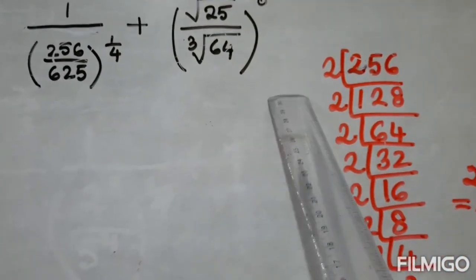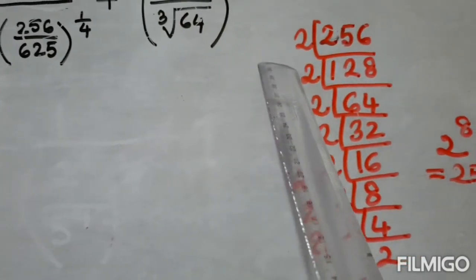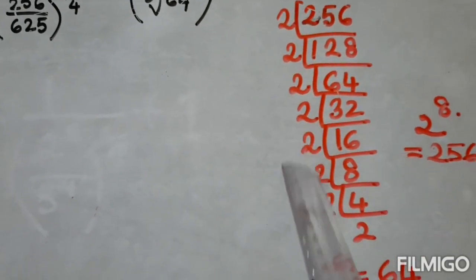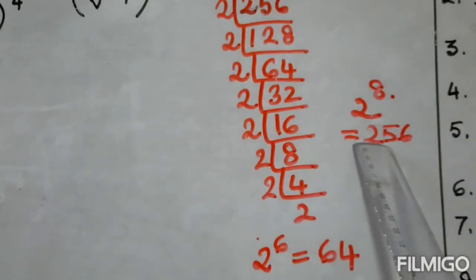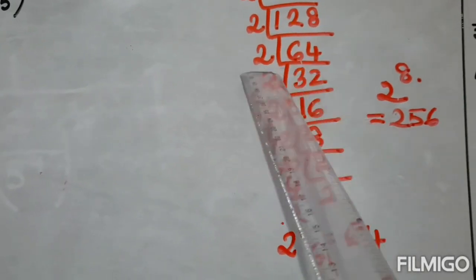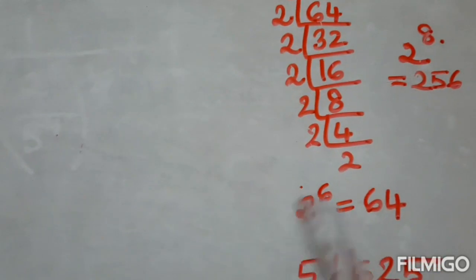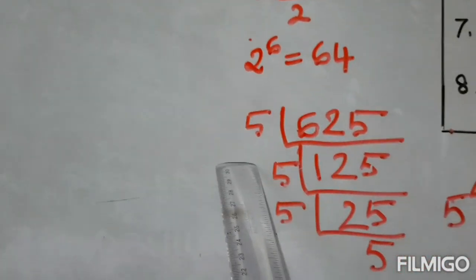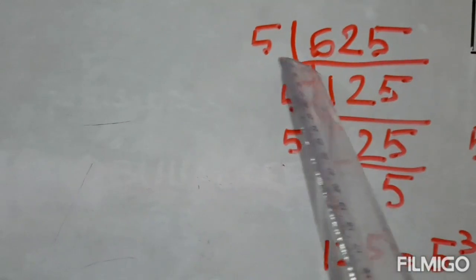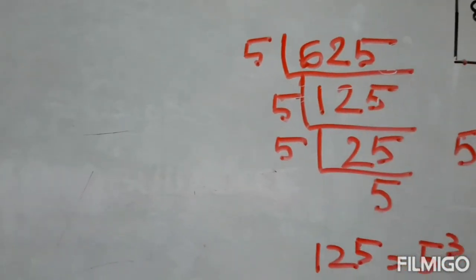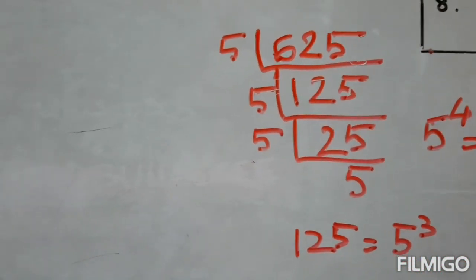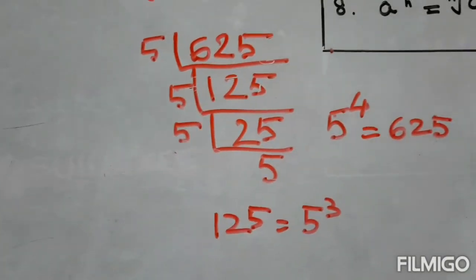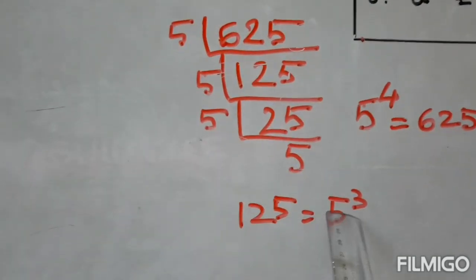Now we will find the prime factors of these numbers. 256 divided by 2 — if we count the 2s, we get 1, 2, 3, 4, 5, 6, 7, 8 — so 2 to the power 8 is 256. Again from 64, counting gives 1, 2, 3, 4, 5, 6 — so 2 to the power 6 is 64. 625 divided by 5 — since the units place is 5, dividing repeatedly gives 5 to the power 4 which is 625. And 125 is 5 cubed.